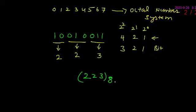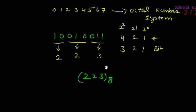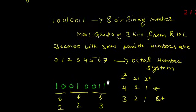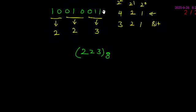तो जो finally after grouping number मिलेगा वो octal number होगा. इस case में जो हमारा octal equivalent है, that is 223, base 8.